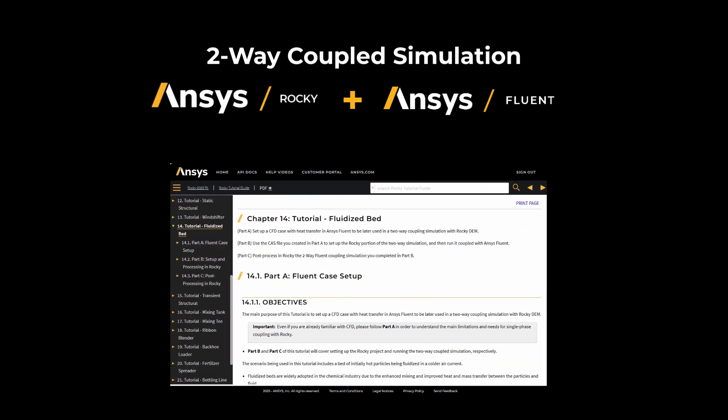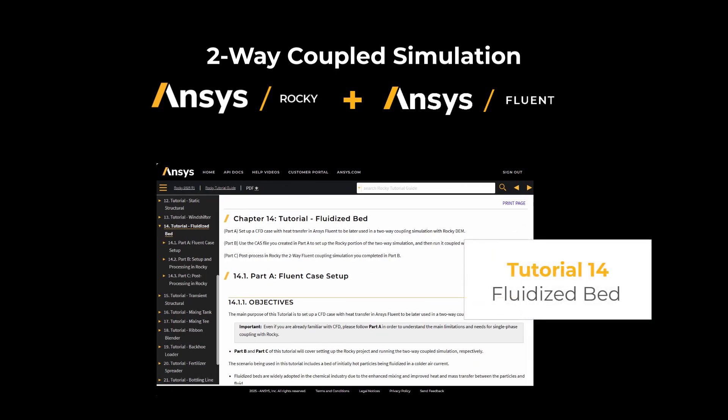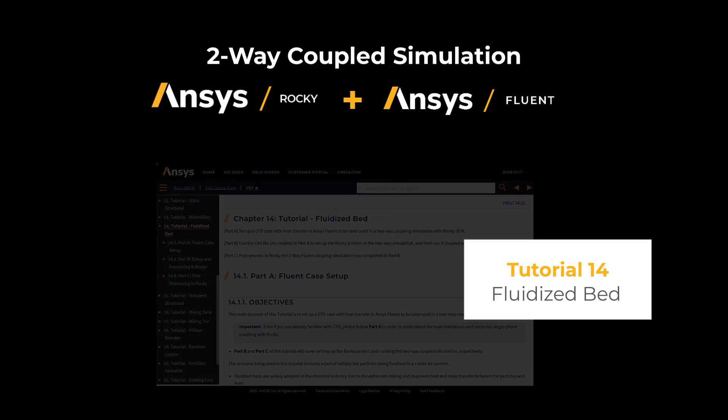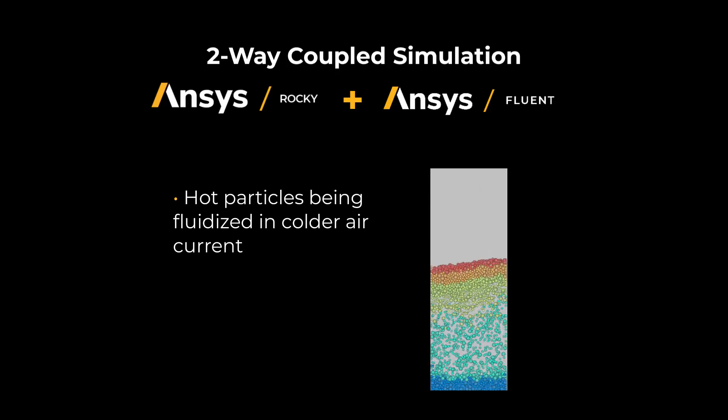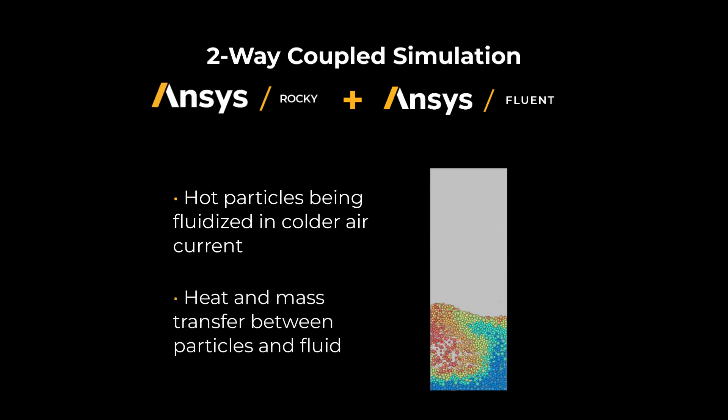In this lesson, we will demonstrate a CFD-DEM two-way coupling case using ANSYS Rocky software and ANSYS Fluent software. The case demonstrated is the fluidized bed, which is Rocky's tutorial 14. You can access the tutorial 14 from the links available in this lesson. The fluidized bed consists of a bed of hot particles being fluidized by a current of colder air. This is a common application in the chemical industry due to enhanced mixing and improved heat and mass transfer between fluid and particles.